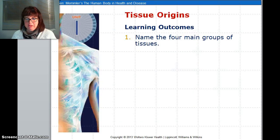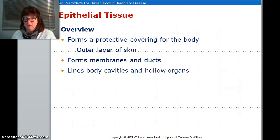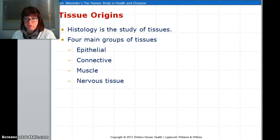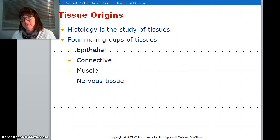To begin with, there are four types of tissues. Our four types of tissues are epithelial, connective, muscle, and nervous.